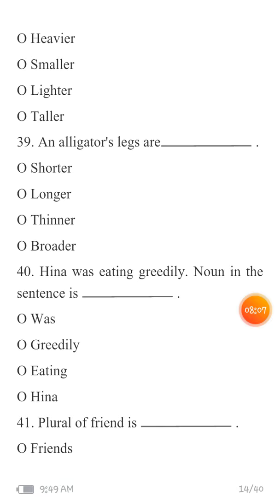MCQ 40: 'Heena was eating greedily.' Noun in the sentence is — Heena was eating very tezi se. You have to identify the noun — the name in this sentence. Your options are: was, greedily, eating, and Heena.